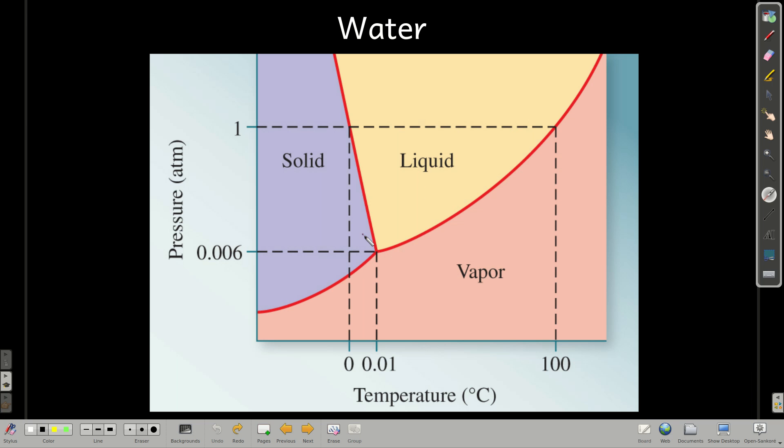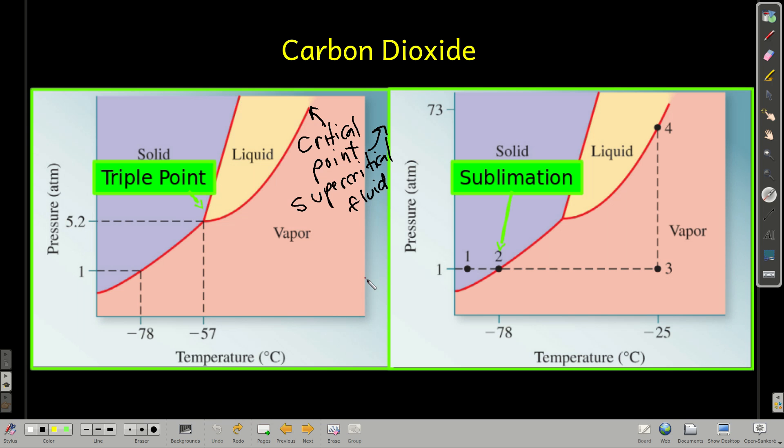This is water. And water has a fairly unique characteristic to it in its phase diagram. And that this line, the line that separates the solid from the liquid phases, it leans to the left. If you go back and look at carbon dioxide, most substances look like this.